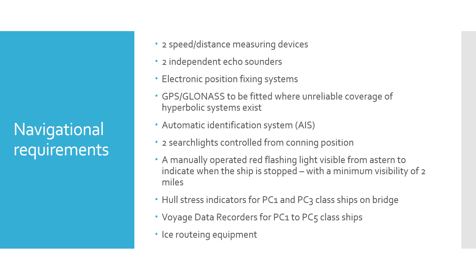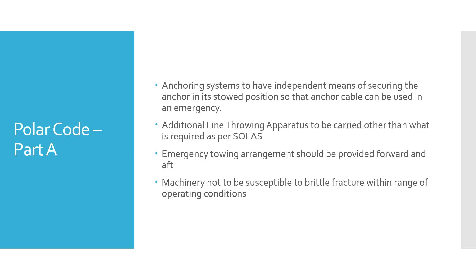Hull stress indicators on the bridge should be available for PC1 to PC3 class ships. Voyage data recorders for PC1 to PC5 class ships should be available. Polar classes range from PC1 to PC7, and AIS routing equipment should be available on ships as well. The code also discusses anchoring systems requiring an independent means of securing the anchor in its stored position so that anchor cables can be used in an emergency.